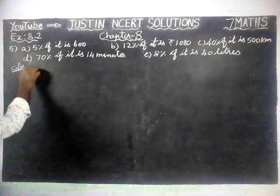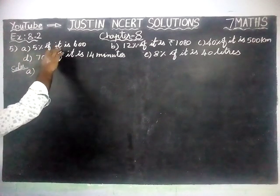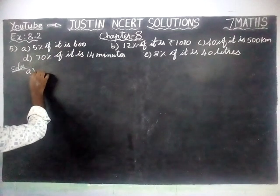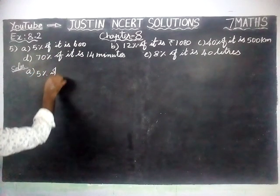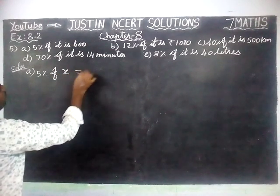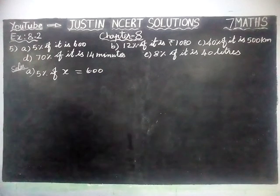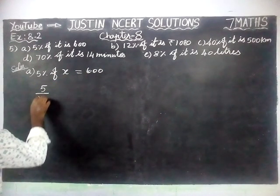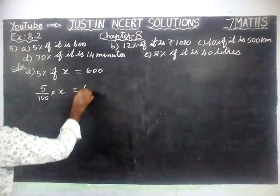First question, part A: 5% of it is 600. So we are going to write 5% of X equal to 600. That is, 5 divided by 100 into X equal to 600.